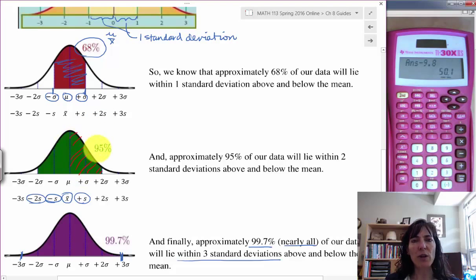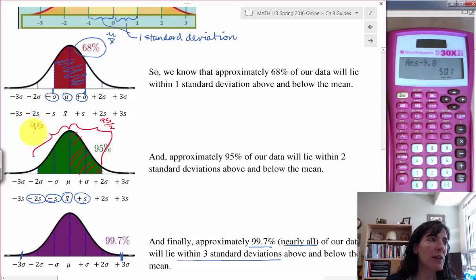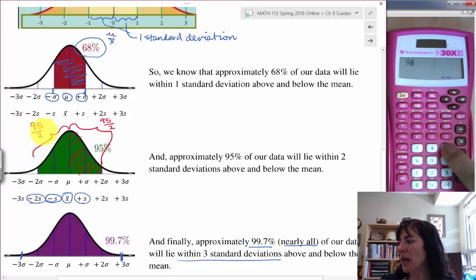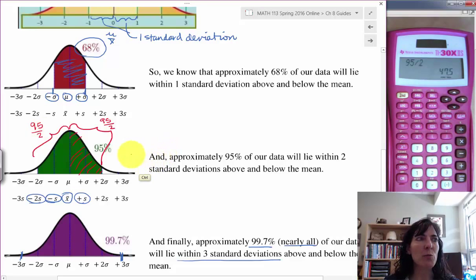Right, all of this green part on the right-hand side, so it's going to be half of, because it's symmetric, when I fold it, it's going to be exactly the same on both sides of that mean. And so this part here is going to be 95% divided by 2. So when I take that 95 divided by 2, I get half, or 47.5% for each half.